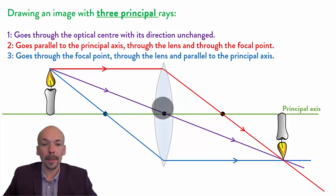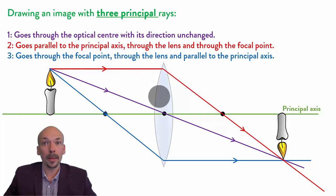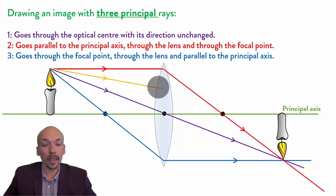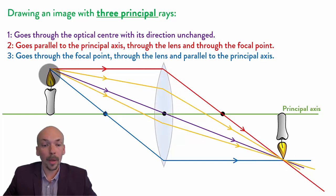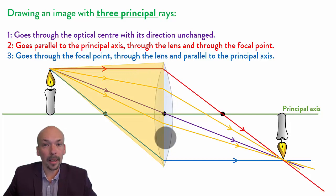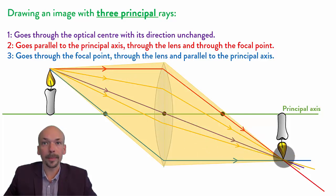Now we have drawn the image with the three principal rays, but of course there are many more light rays going from this source. Other light rays going through the lens will also go to this image point. All light rays from this point which hit the lens will go to this point, but to determine this point you need to use the three principal rays.